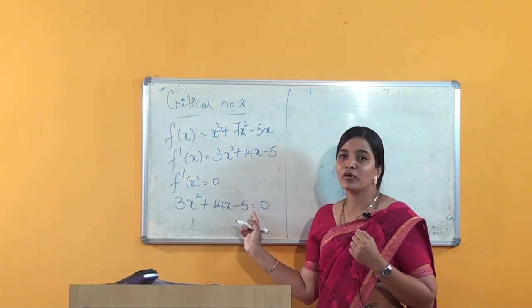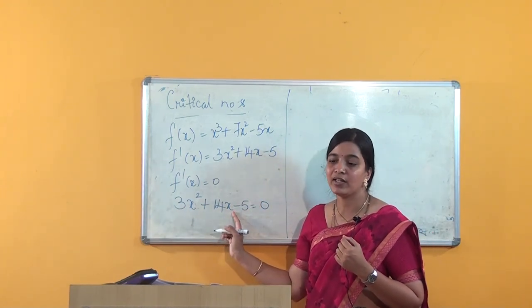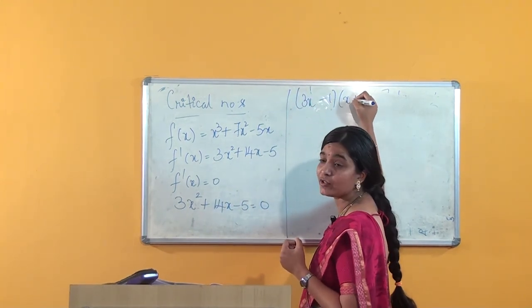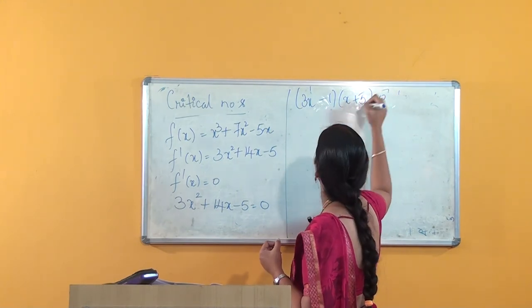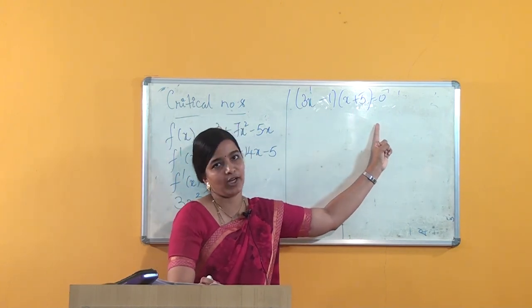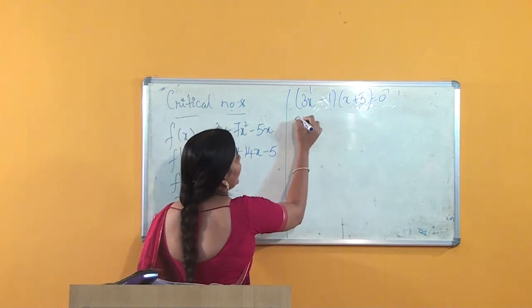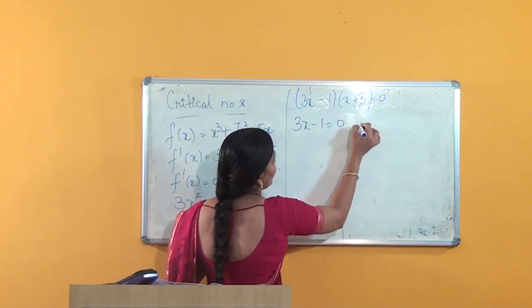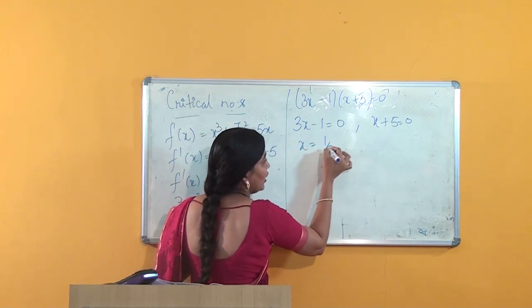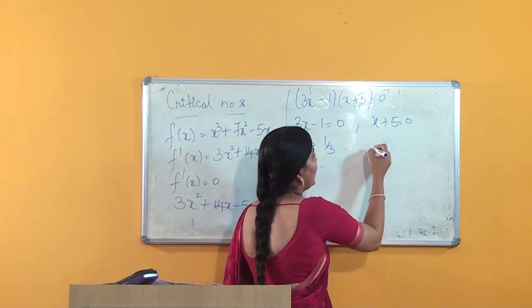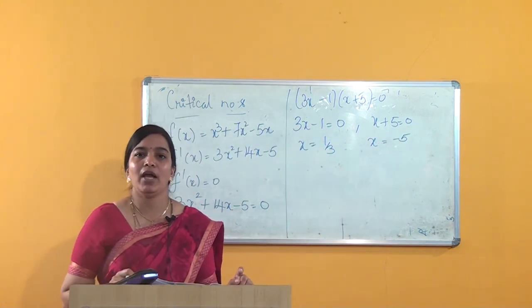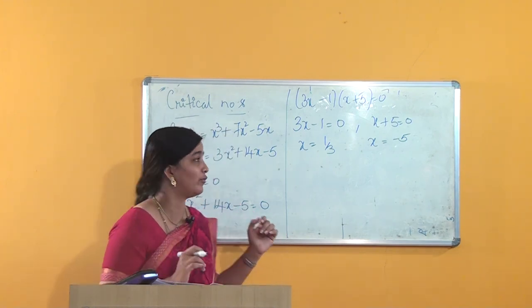To solve the quadratic, we need factors that multiply to −15 and add to 14. Solving, we get (3x − 1)(x + 5) = 0. So either 3x − 1 = 0, giving x = 1/3, or x + 5 = 0, giving x = −5. Therefore x = 1/3 and x = −5 are the critical points of this function.